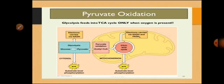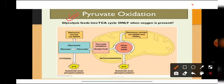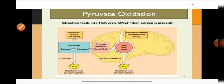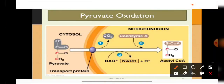The second step, oxidative decarboxylation, is also known as pyruvate oxidation. The pyruvate formed from glycolysis enters the mitochondria and undergoes both oxidation and decarboxylation to form acetyl coenzyme A. In pyruvate oxidation, the three-carbon compound pyruvate undergoes dehydrogenation — the hydrogen lost is picked up by NAD⁺ to form NADH₂. Pyruvate also undergoes decarboxylation, losing one carbon as CO₂.